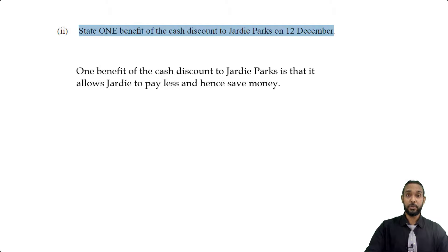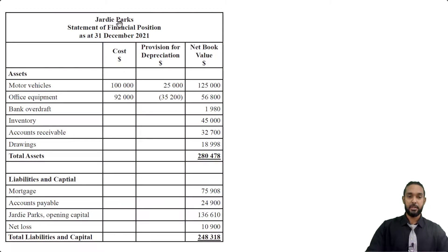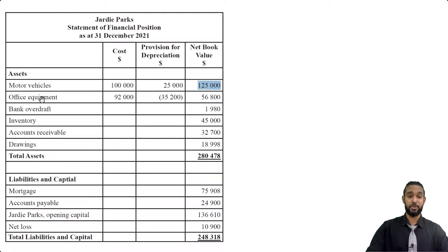Let's take a look at the last part of this question. The following is a statement of financial position for the year ended 31st December 2021, prepared by an accounting student who was an intern at Jordi Parks and contained several errors. Looking at it: motor vehicles shows cost 100,000 plus depreciation 25,000 giving 125,000 — that's wrong, you're supposed to subtract depreciation. Bank overdraft has been listed as an asset — that's a liability. And drawings has been listed as an asset — that's supposed to be a reduction to capital.